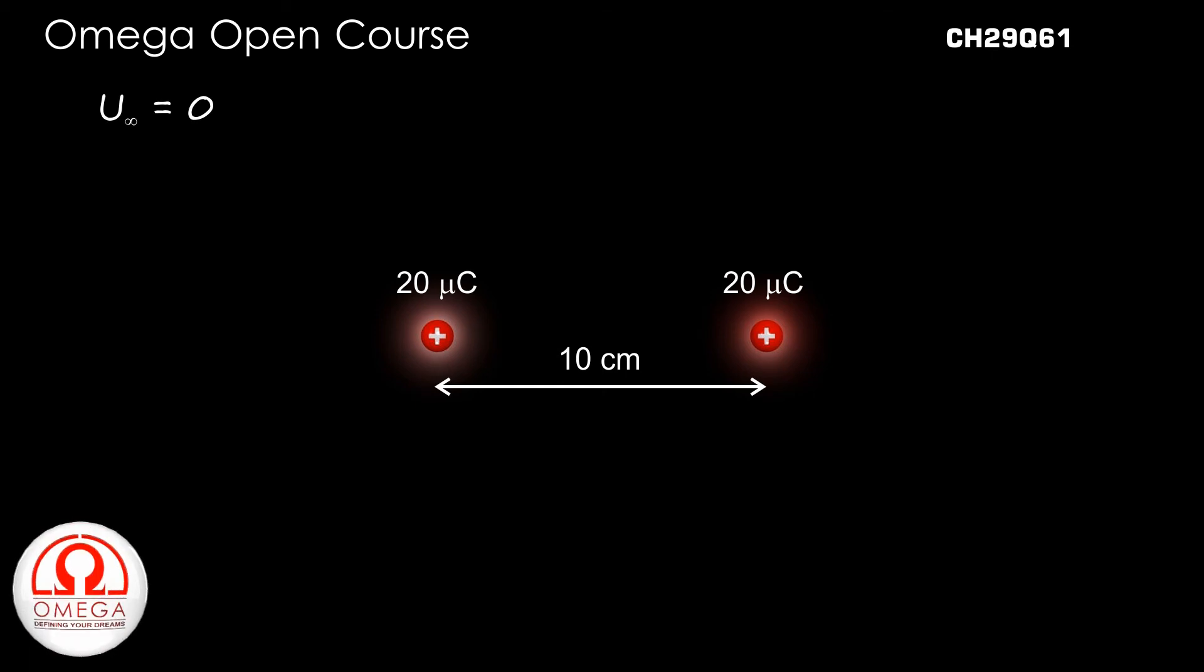When the separation between them becomes R, the potential energy is given by K Q1 Q2 by R.